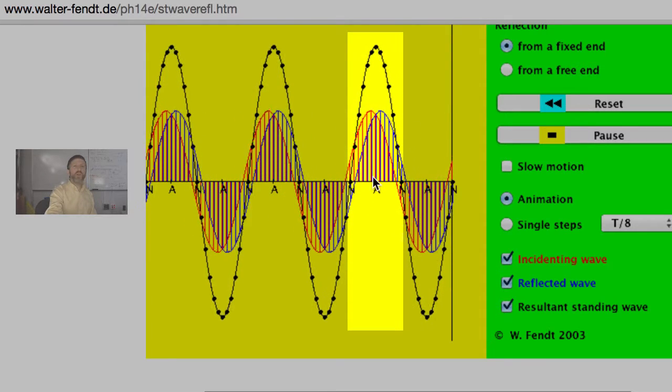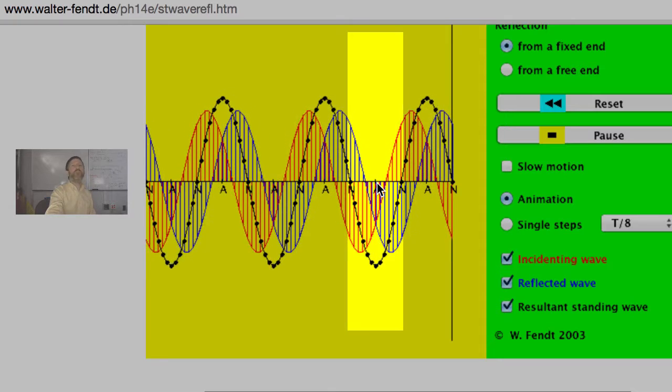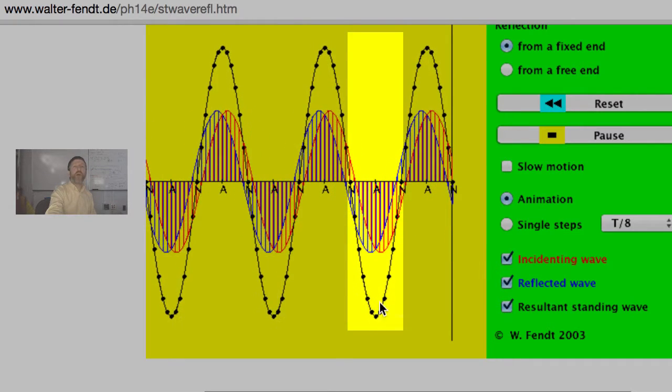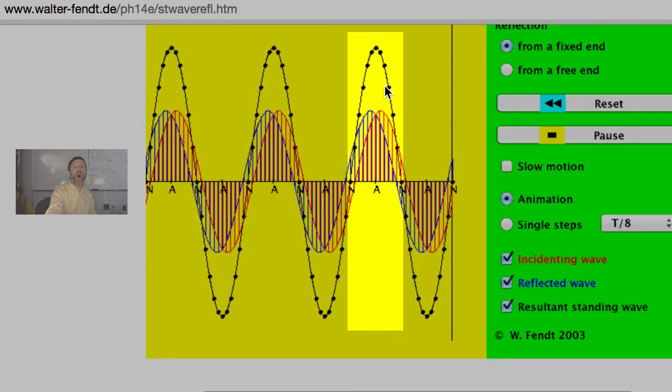Both of the individual ones are zero. You see how right now both the red wave and the blue wave added to zero. That's why for this part it's always constructive interference. Why is this labeled A where there's always constructive interference? What does it stand for?